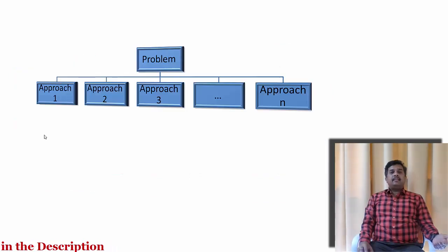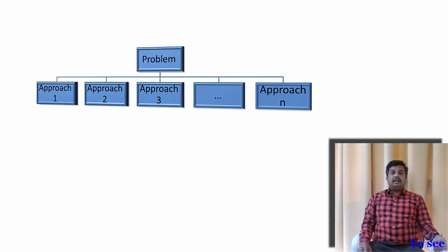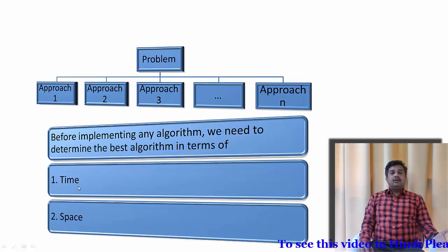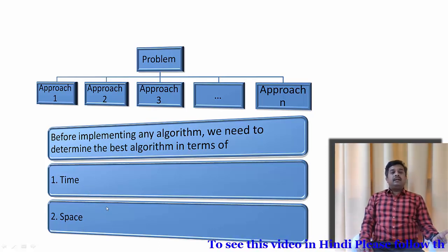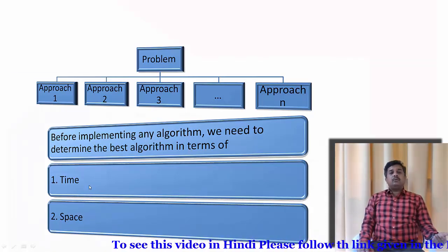Let us assume there is a problem and there are several approaches to solve it — approach 1, approach 2, up to approach n. In order to identify the best approach we must have some criteria based on which we choose an approach and write a program. So basically before implementing any algorithm we look mostly at time or space. We see in how much less time the program can be done and how much space it takes. Basically we find a trade-off between time and space: when we take more time we generally use less space, or when we use more space we generally complete a task in less time.